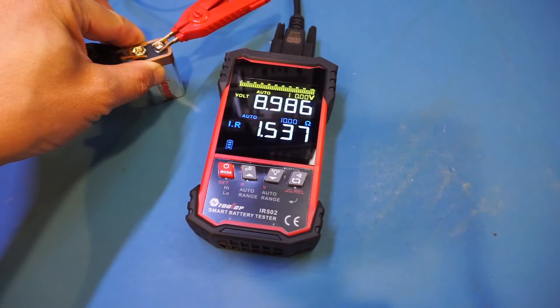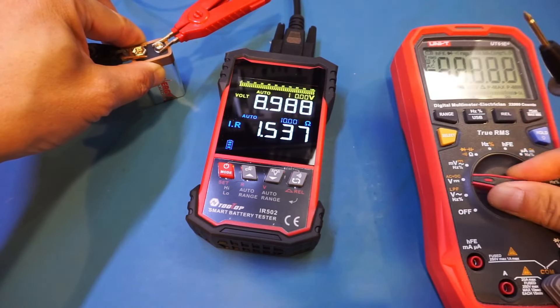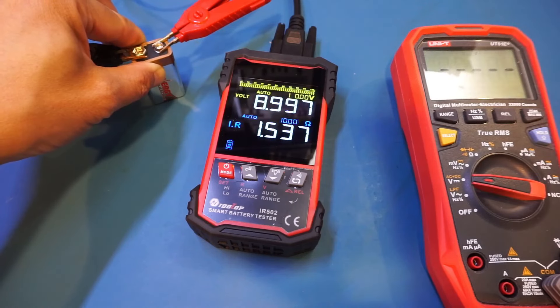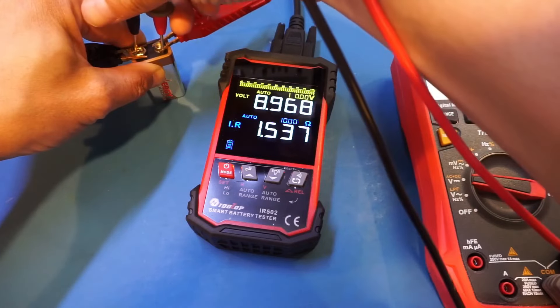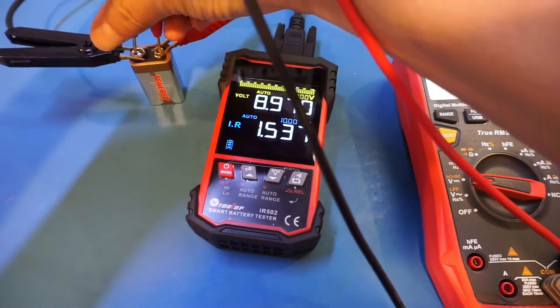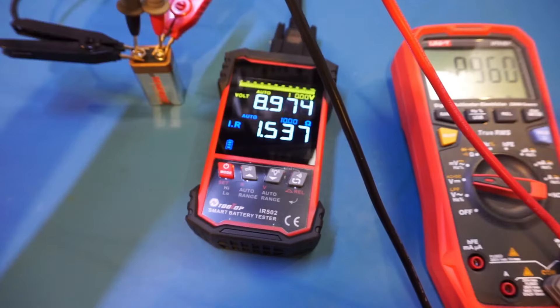You can see we're actually measuring 1.5 ohms in terms of the internal resistance. Let's just double check the voltage here. You can see that these two meters largely agree.